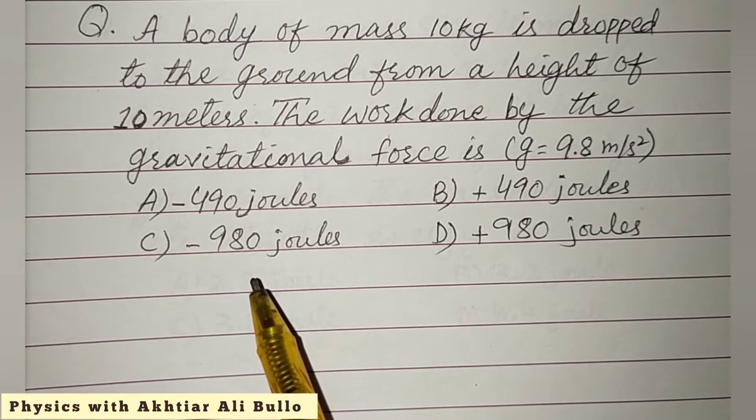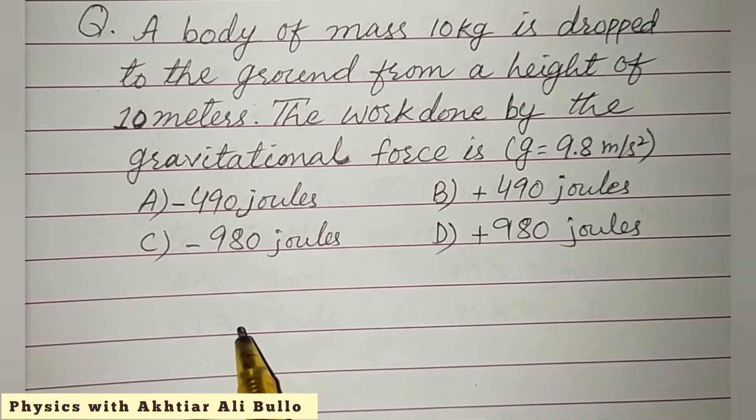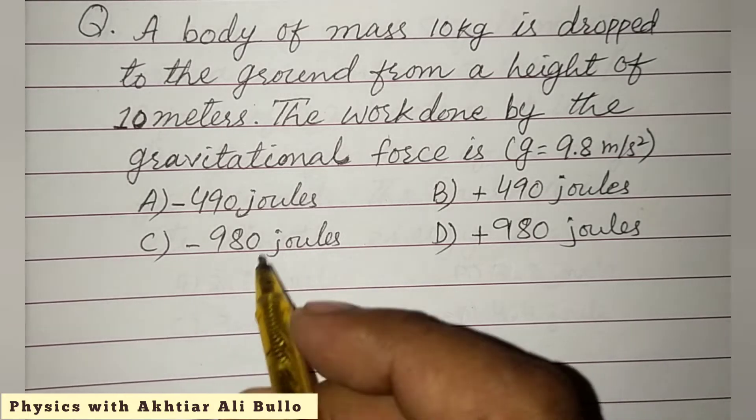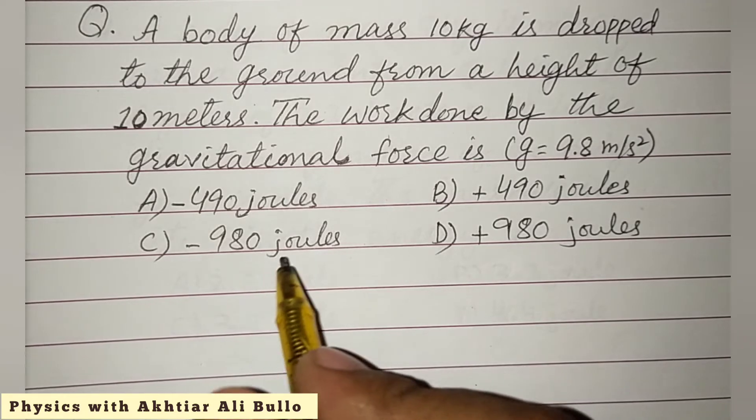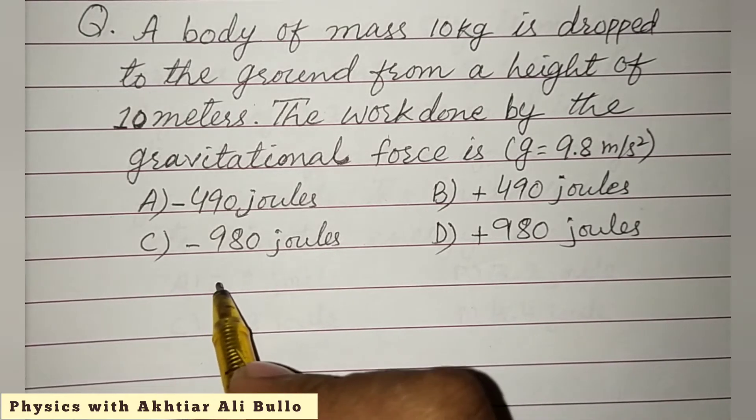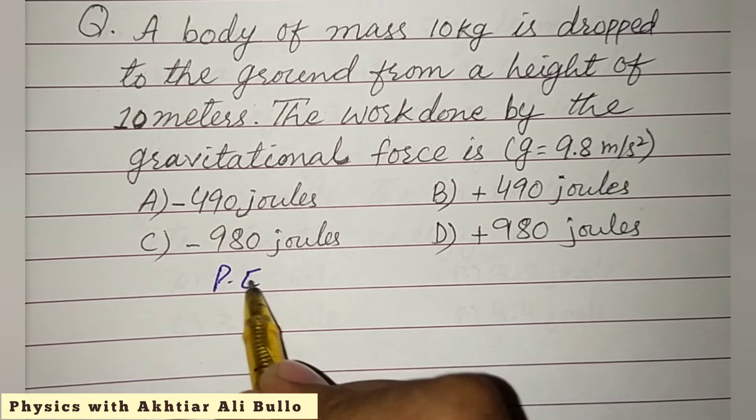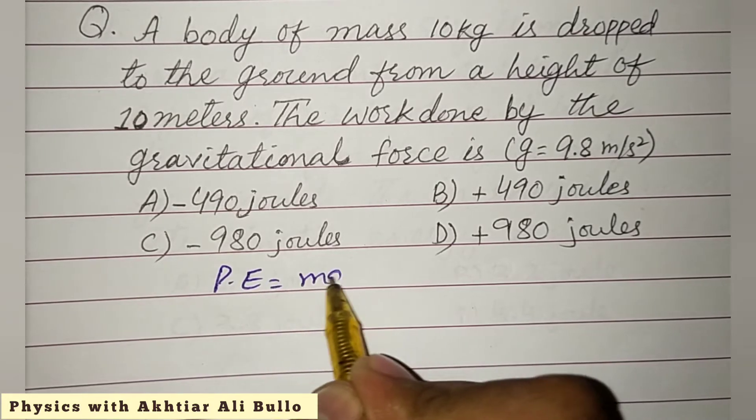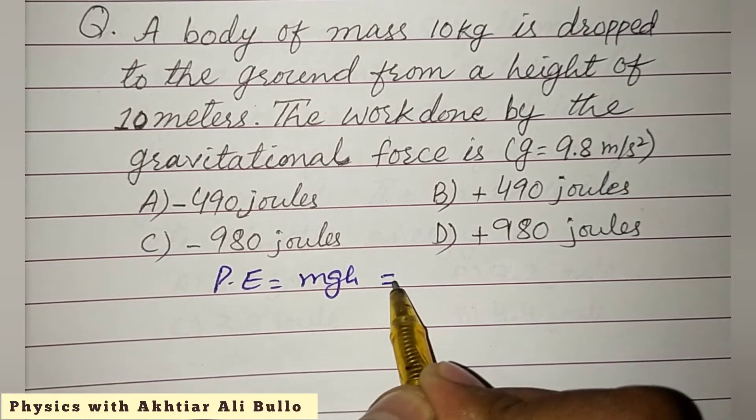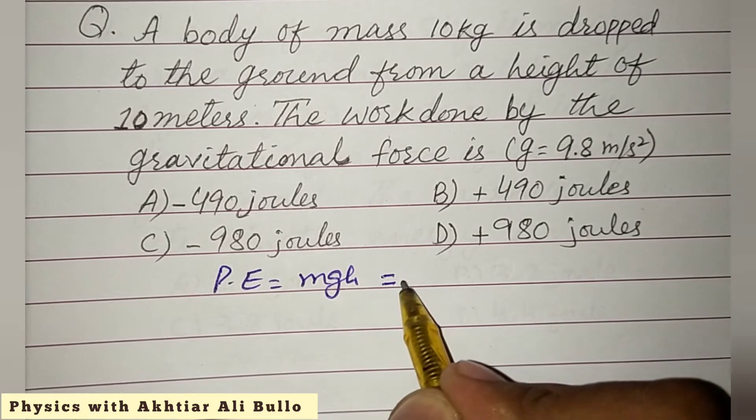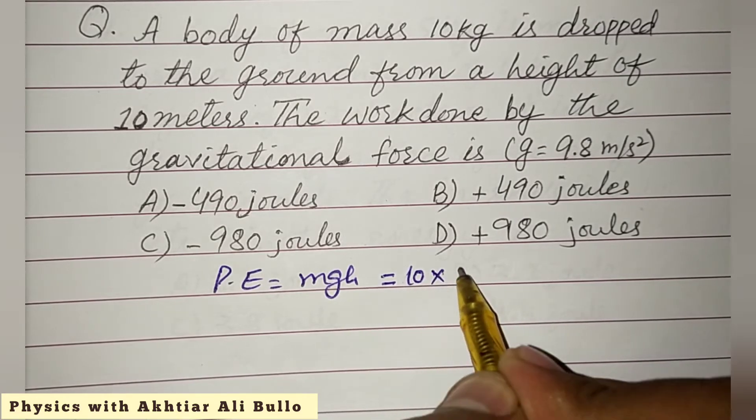As we know that the object is dropped to the ground, so we will take G as positive. As here work is done in the form of potential energy, so potential energy is equal to mgh. As mass is obtained as 10 kg and G is 9.8 and height is obtained as 10 meters.